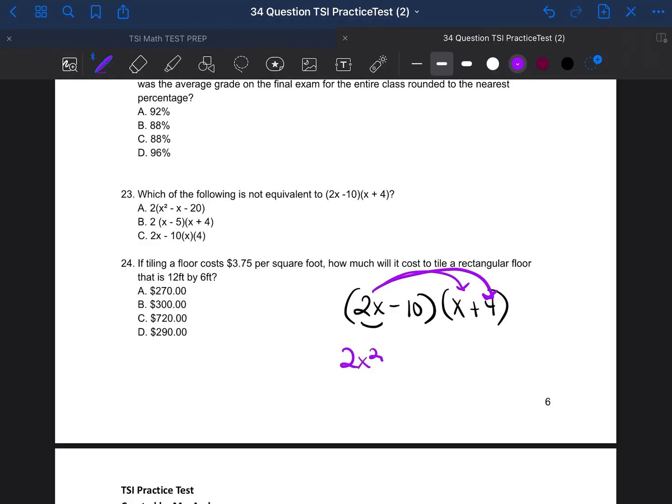And then 2x times 4. So 2x times 4. 2 times 4 is 8. There's nothing to multiply the x again. So you just bring it down. 8x. Then we go ahead and switch over to the 10. So negative 10 times x. Negative 10 times x. 10. Negative 10 times 1 is negative 10. There's nothing to multiply the x by. You bring it down. Minus 10x. And then negative 10 times 4 is negative 40.